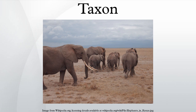Many modern systematists, such as advocates of phylogenetic nomenclature, use cladistic methods that require taxa to be monophyletic. Their basic unit, therefore, is the clade rather than the taxon. Among those contemporary taxonomists working with traditional Linnaean nomenclature, however, few propose taxa they know to be paraphyletic.